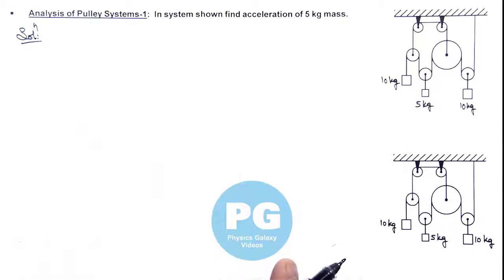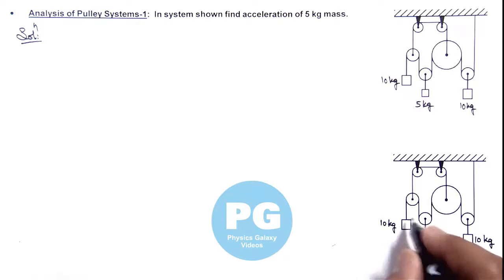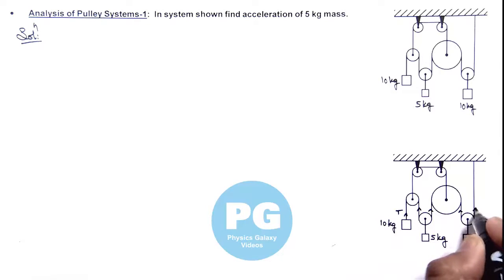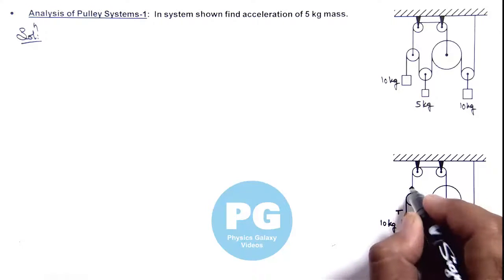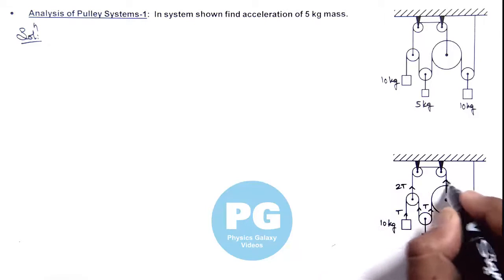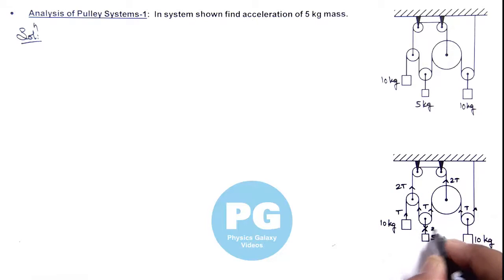Let's have a look at this figure where we distribute tensions. In the longest string, if we take the tension to be T, then being ideal pulleys, the tension in this string will be 2T. Here also it'll be 2T, and here also it is 2T.